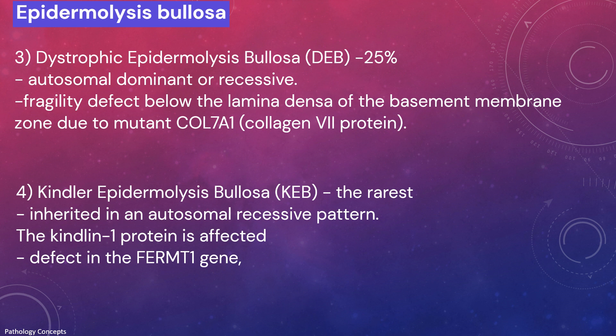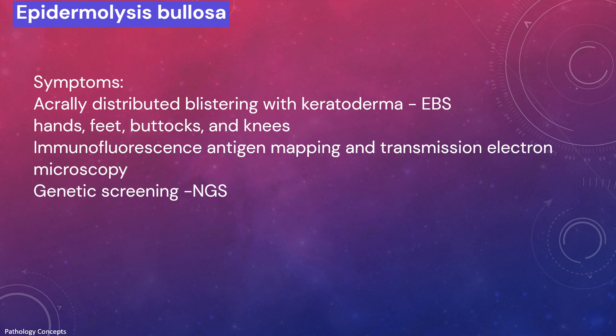Kindler EB results in fragility in any plane of the dermo-epidermal junction. Acral distribution of blistering with characteristic derma is a hallmark of localized EBS, affecting hands, feet, buttocks, and knees. Conventional light microscopy has no role in diagnosis of epidermolysis bullosa; immunofluorescence antigen mapping and transmission electron microscopy help subtype these cases by highlighting target antigens. Genetic screening via NGS can confirm the subtype.